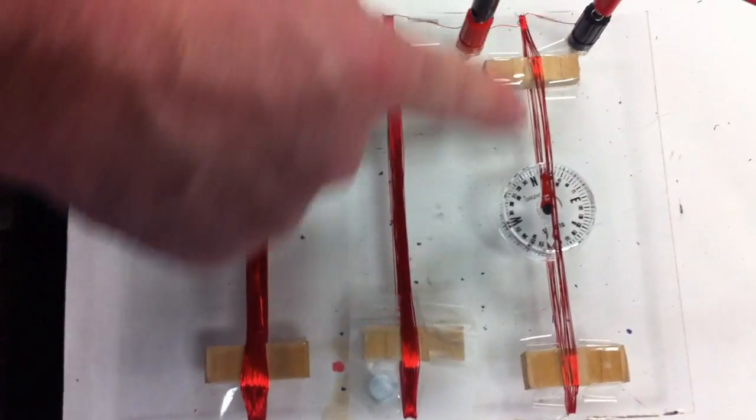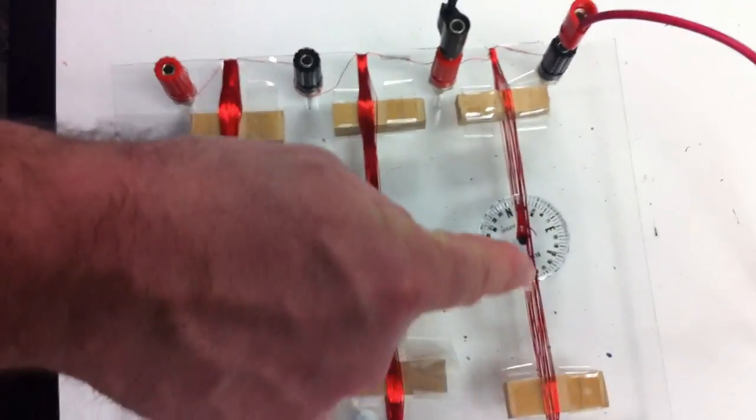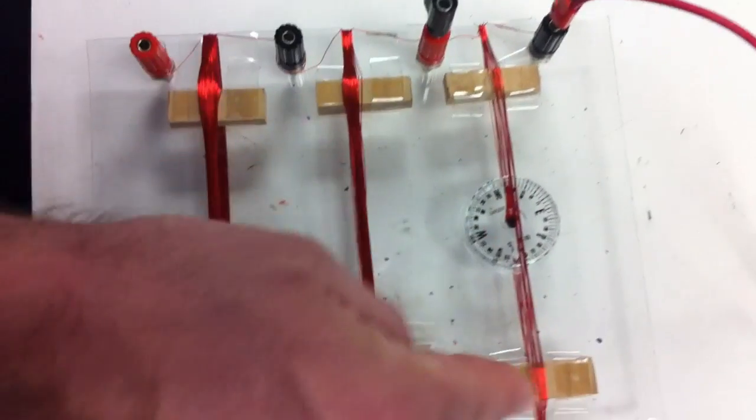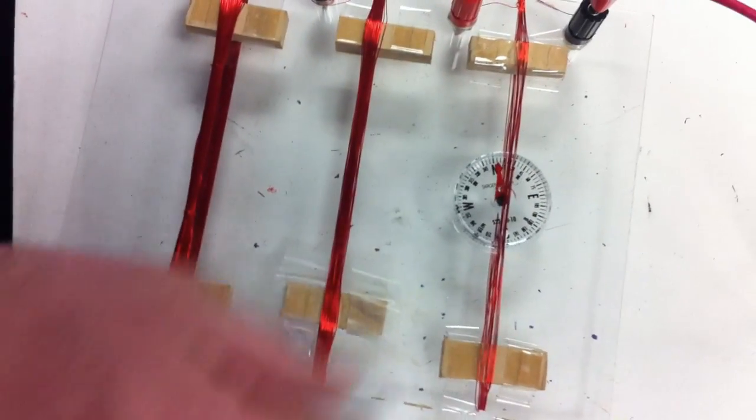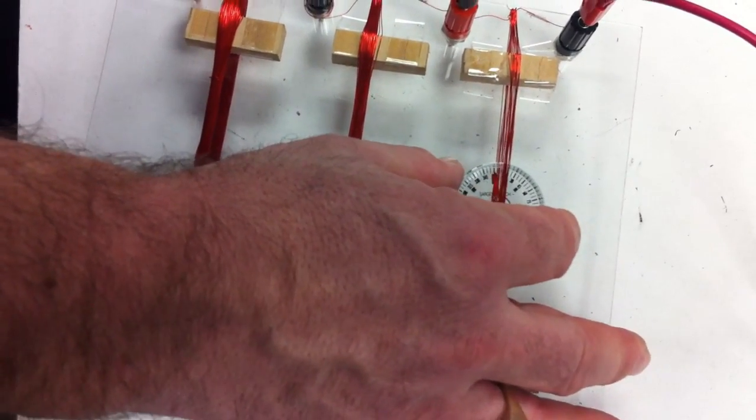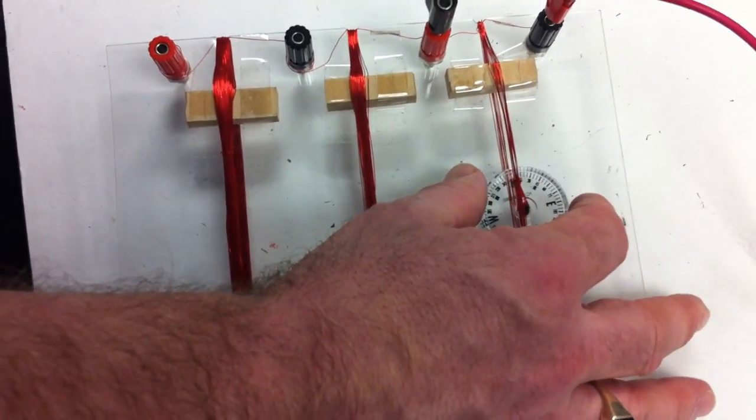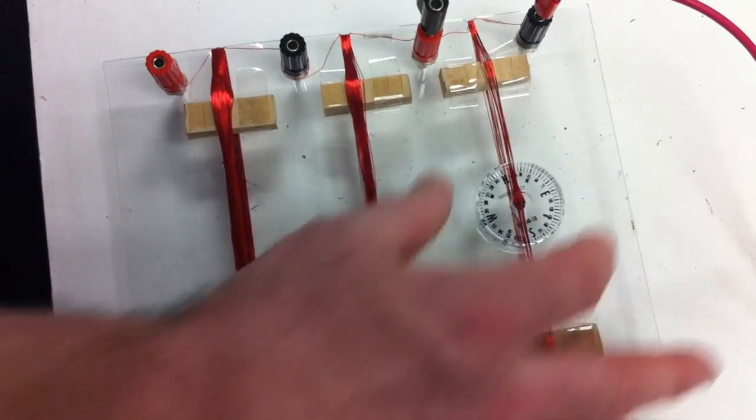And the way it runs in here is that the electric current is going to run to the north. This is actually facing geographic north. And you can tell by the compass underneath there once I rotate it a little bit. So that's pointing to geographic north.